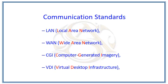Communication standards deal with how the entire data is transferred from one area to another. For example, if design work is going on in India, the same design should be transferred to the United Kingdom or USA. We can transfer the entire data through communication standards: LAN (local area network, for sharing between buildings or blocks), WAN (wide area network, for transferring throughout the globe), CGI (computer generated imagery), and VDI (virtual desktop infrastructure).